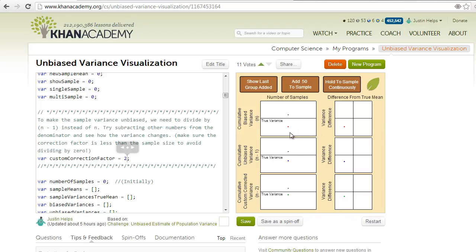On the graphs on the left side, the colored dots show the variance calculated using the sample mean in that method, and the black dots show the variance calculated using the true mean of the population.